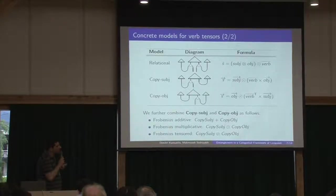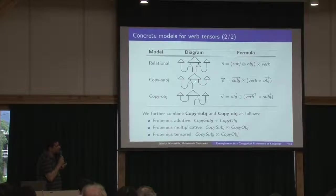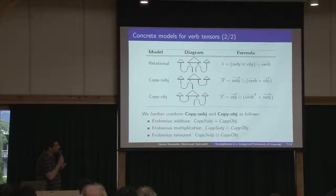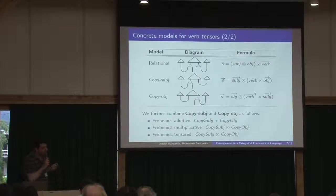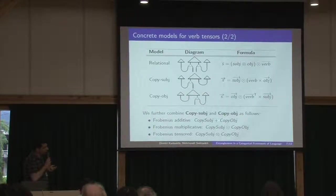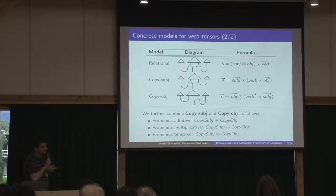If you do this, then you capture partially the interaction of the subject dimension or the object dimension. So it makes sense to further combine these things, for example by adding them or multiplying them.